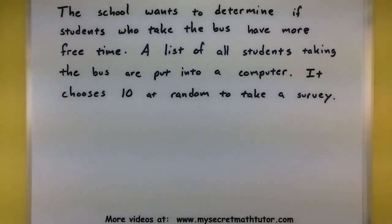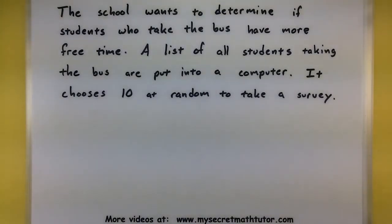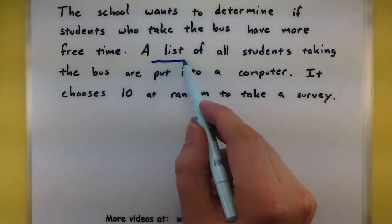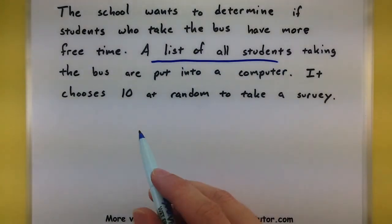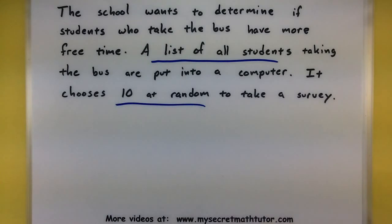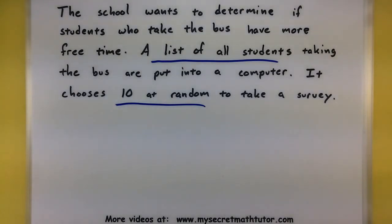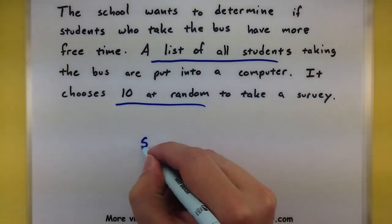They're not splitting students into groups and surveying each group — they're only looking at the students who are taking the bus. They take a list of all the bus students and feed it into a computer, which chooses 10 at random. This is not a systematic sample — it's not taking every tenth one, just 10 students in total chosen at random. We would consider this a simple random sample.